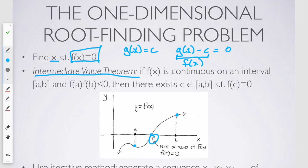And what the bisection method does, like many root finding algorithms, is it generates a sequence of approximations that we hope converges to this root.